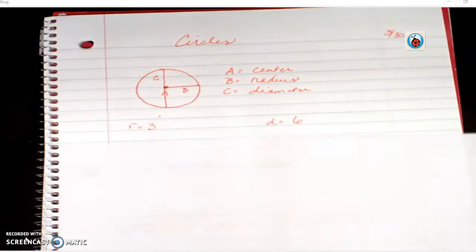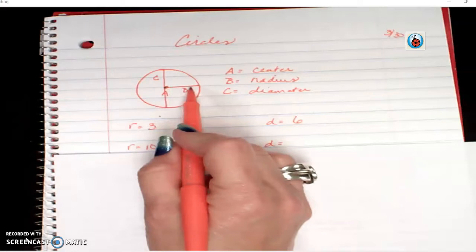If the radius was 10, so going halfway across was 10, if I go all the way across, what would I get? 20.